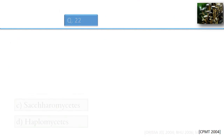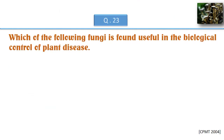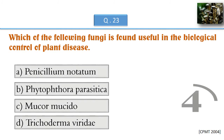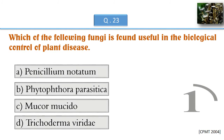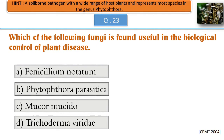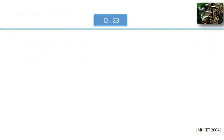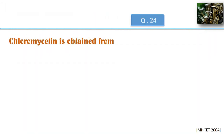Which of the following fungi is found useful in the biological control of plant disease? Chloromycetin is obtained from which organism?